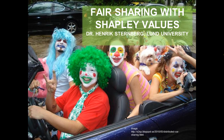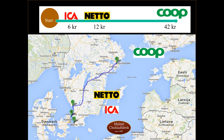We're going to talk about fair sharing with Shapley values. Assume this very simple sample: a transport from Malmö as the starting point to Stockholm where there is Coop. We have Netto in Halmstad, Ika in Helsingborg, and we're starting with some very simple values just to elaborate on the concept.